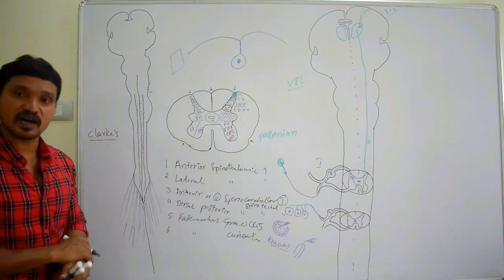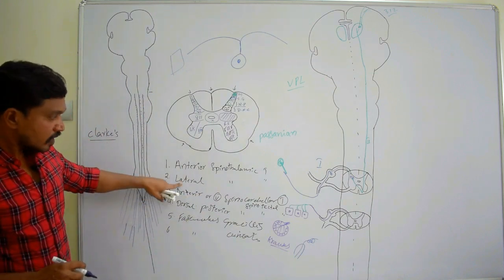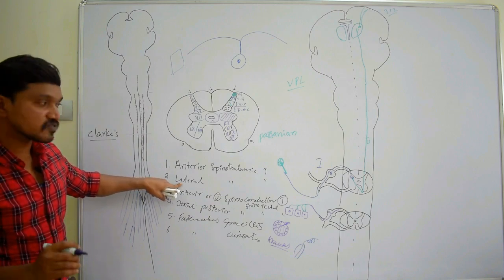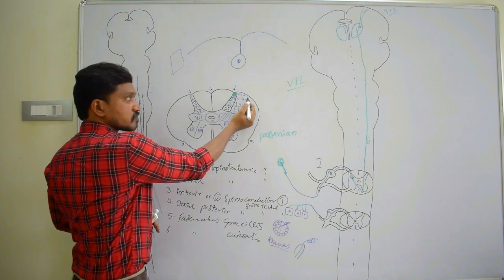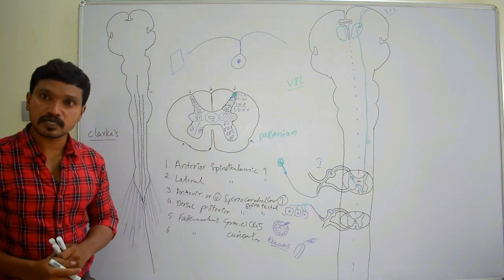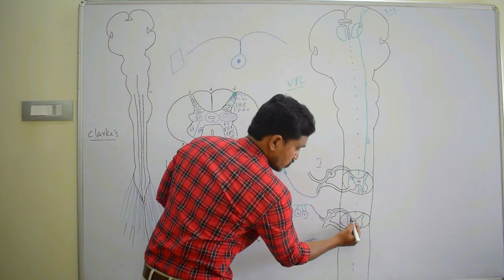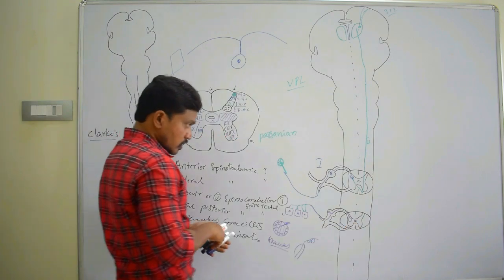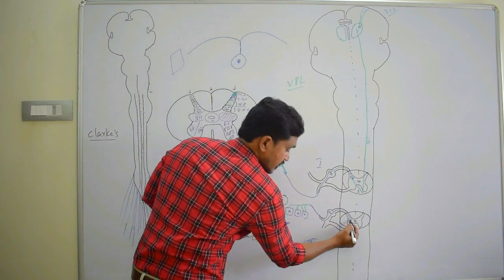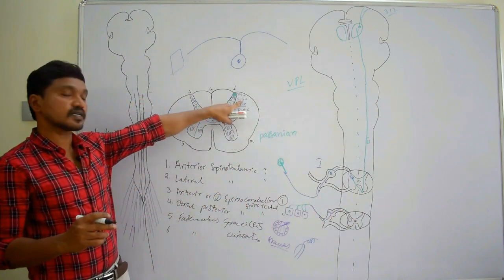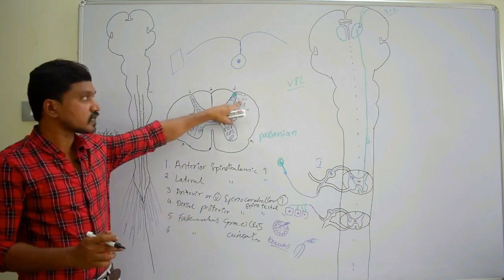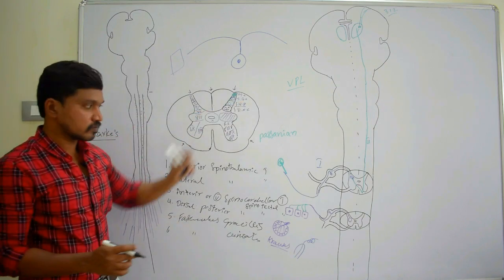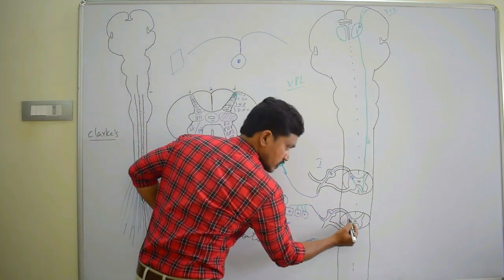For the lateral spinothalamic tract, the second order neurons arise from the marginal nucleus and the substantia gelatinosa — also called the substantia gelatinosa of Rolando. The tract relays in these two nuclei, and the second order neurons start from there.